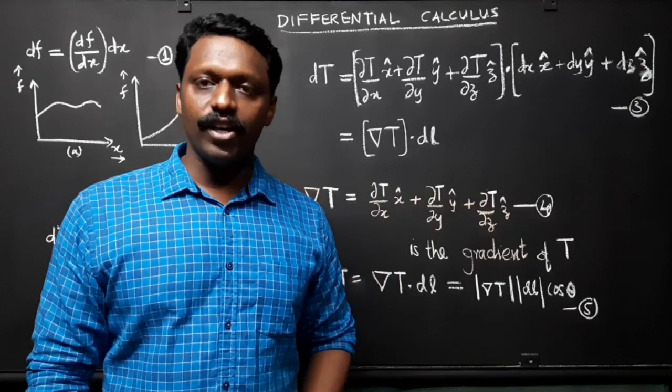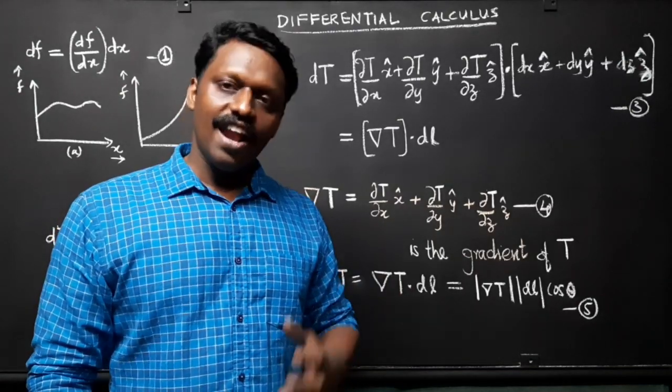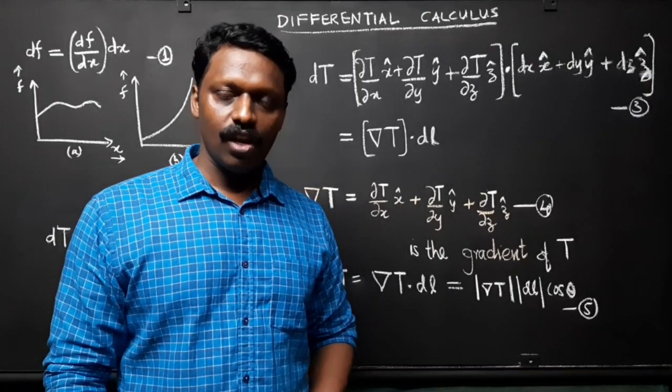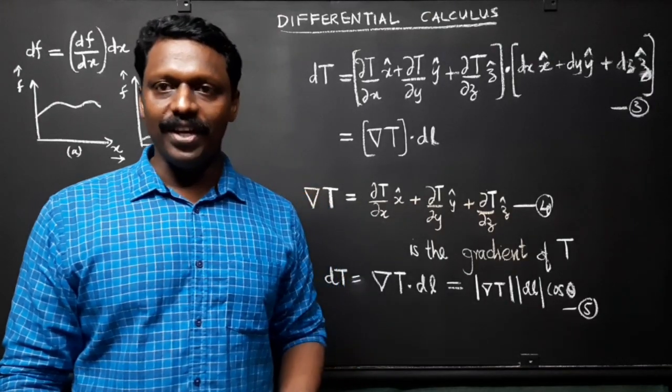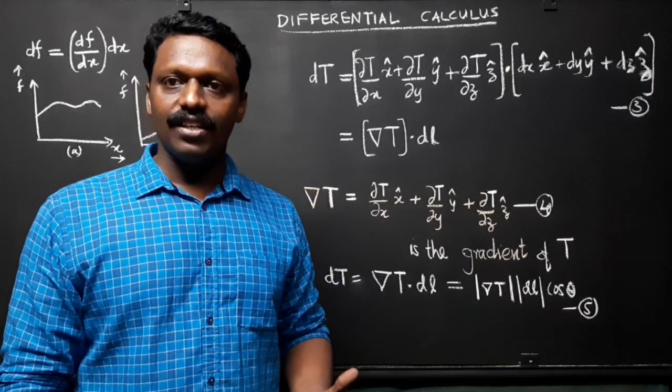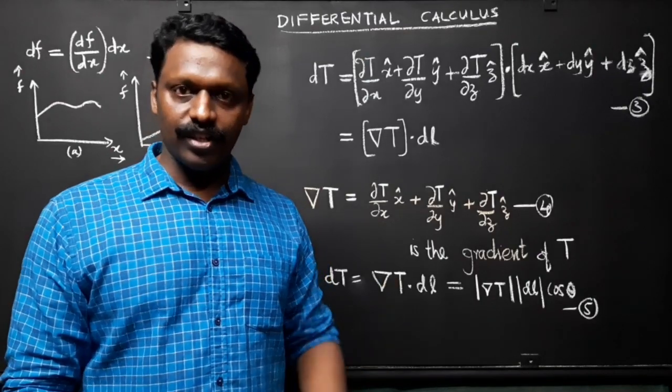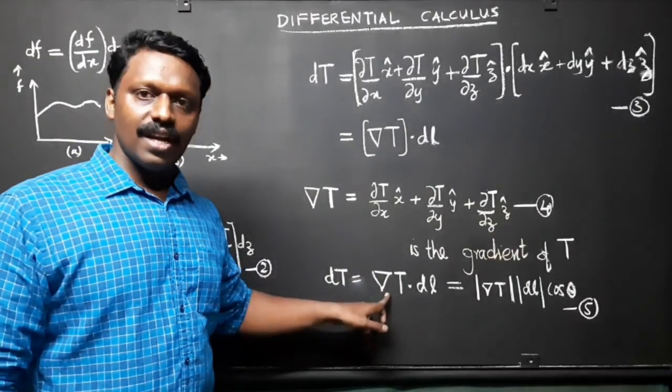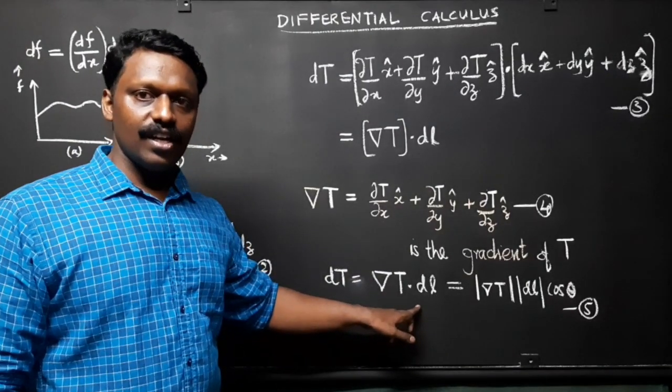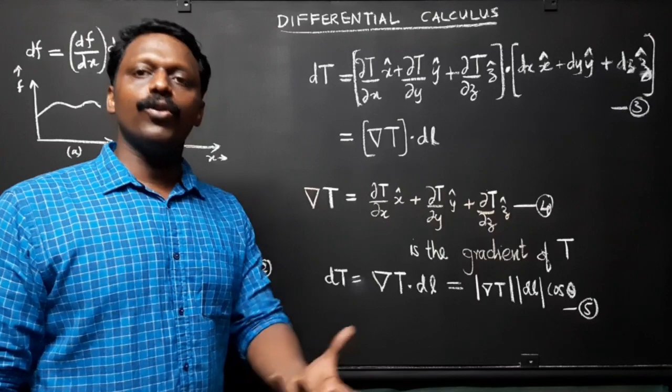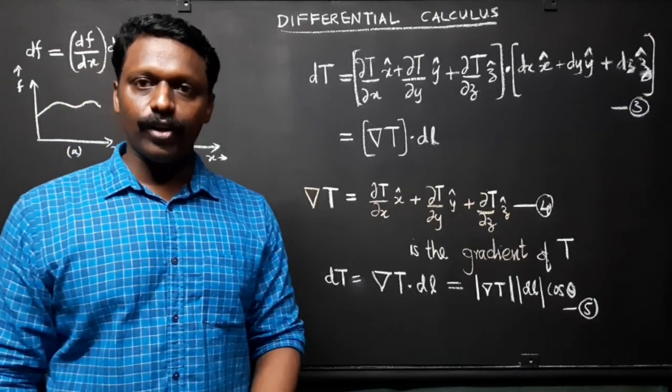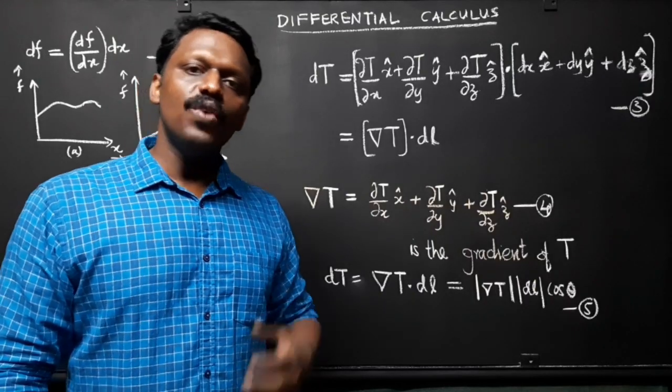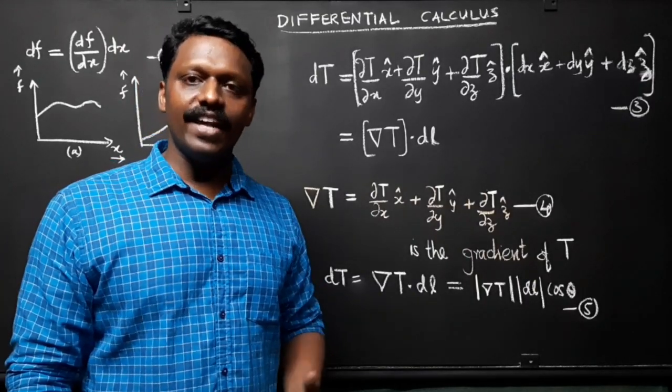Equation 3 is a three-dimensional version of equation 1. What is the geometrical interpretation of the gradient? Like any vector, the gradient has magnitude and direction. To determine its geometrical meaning, let's rewrite the dot product in equation 3 in abstract form. Now, dT equals ∇T · dl equals |∇T| |dl| cos θ, where θ is the angle between ∇T and dl.